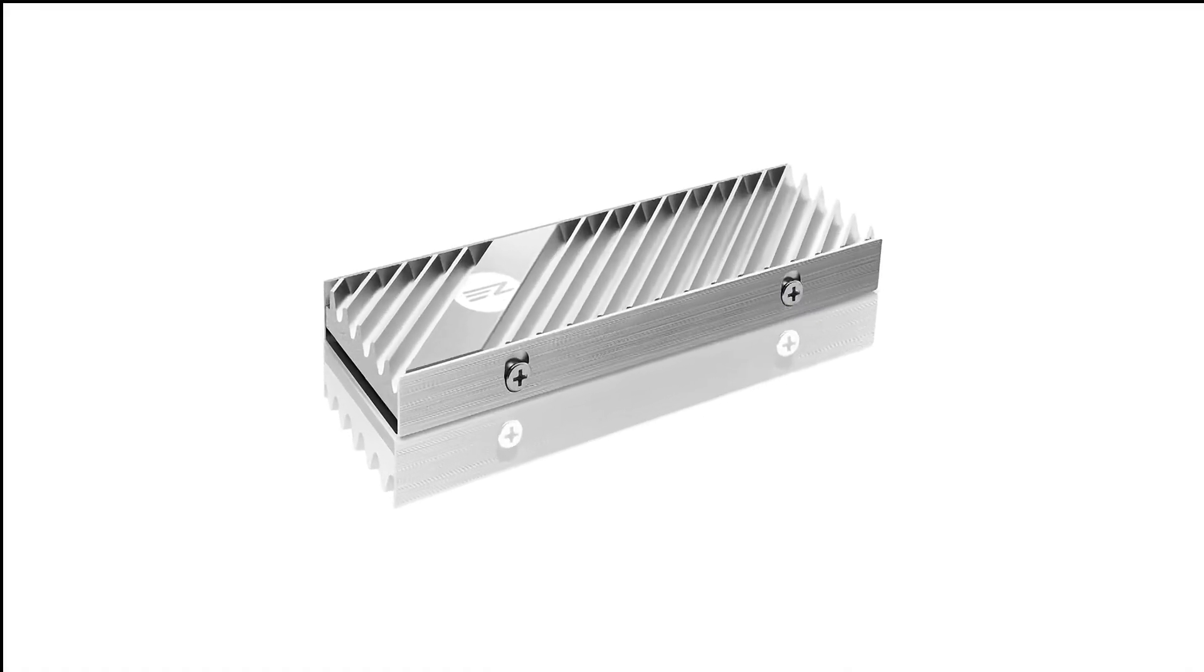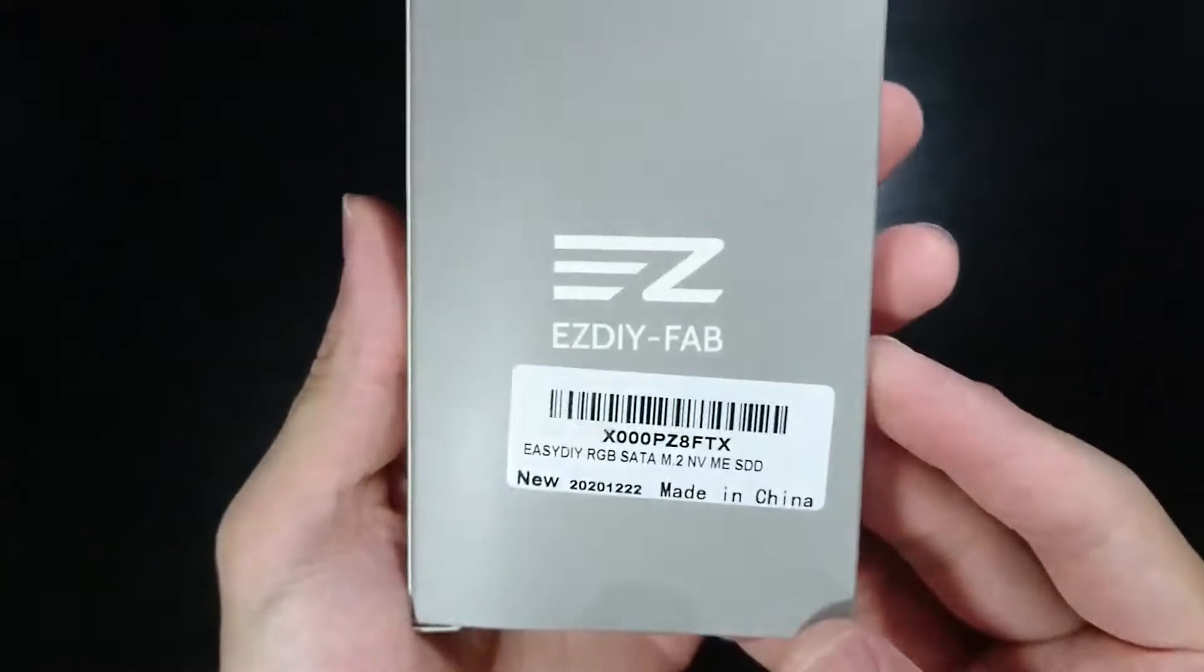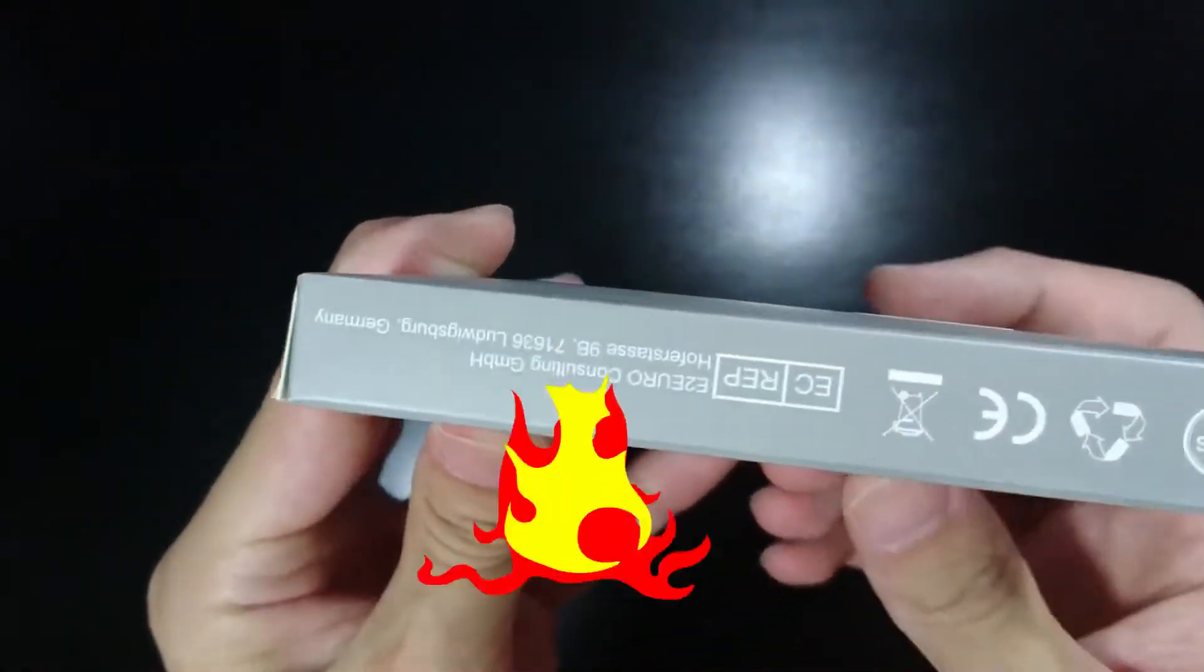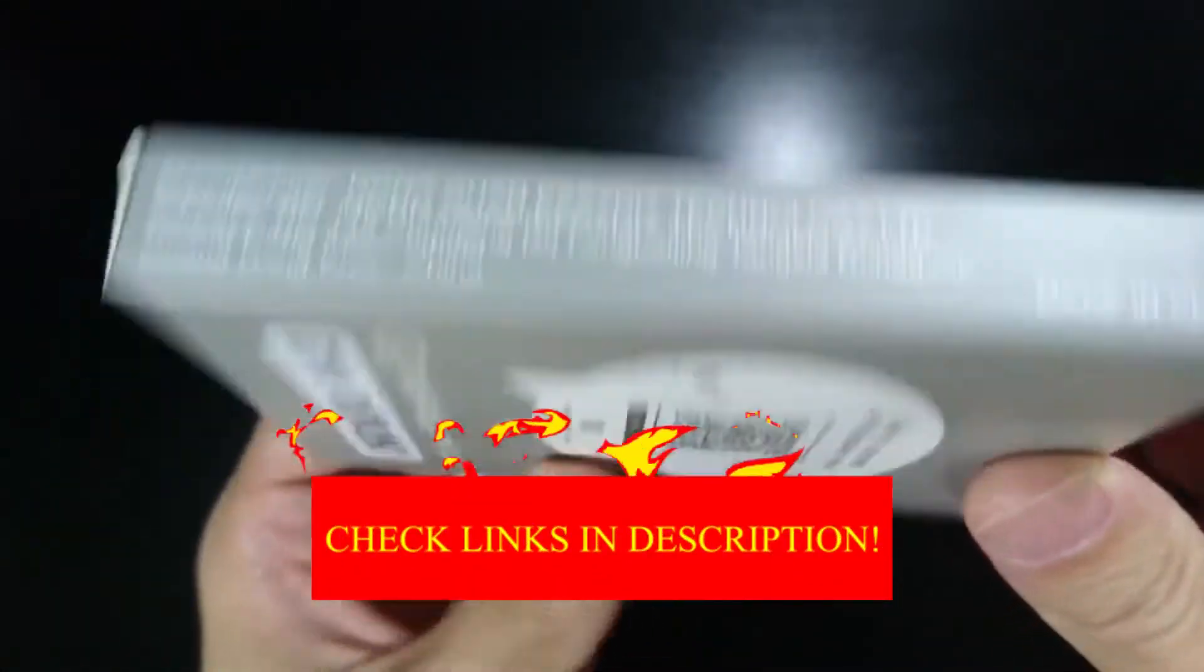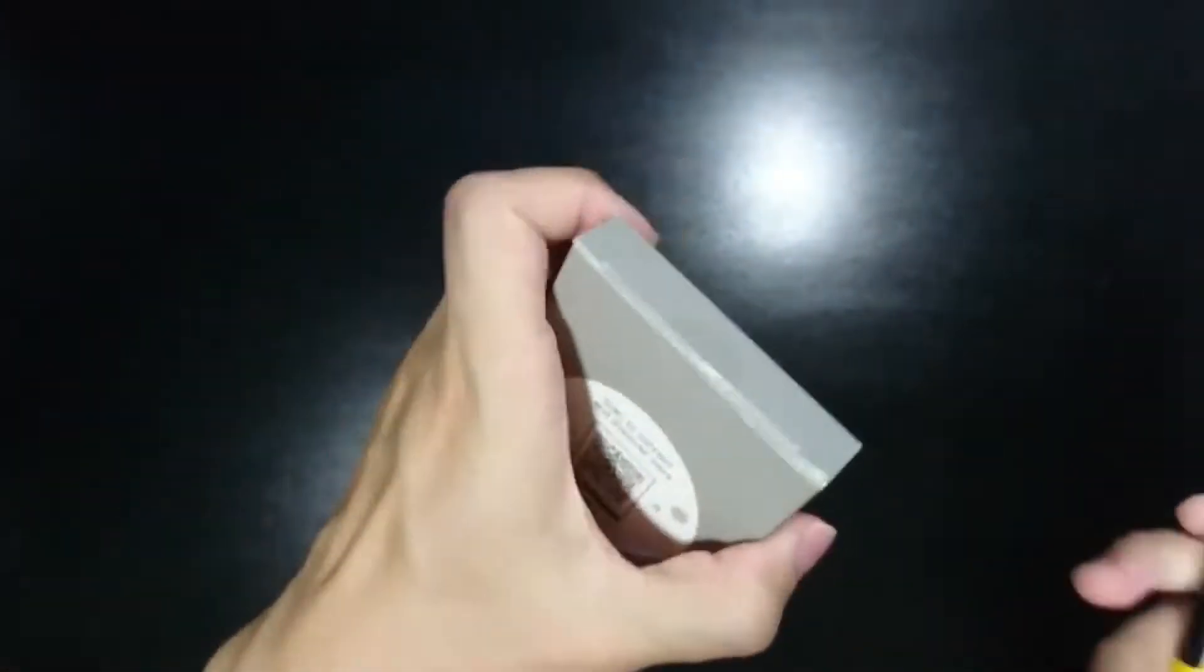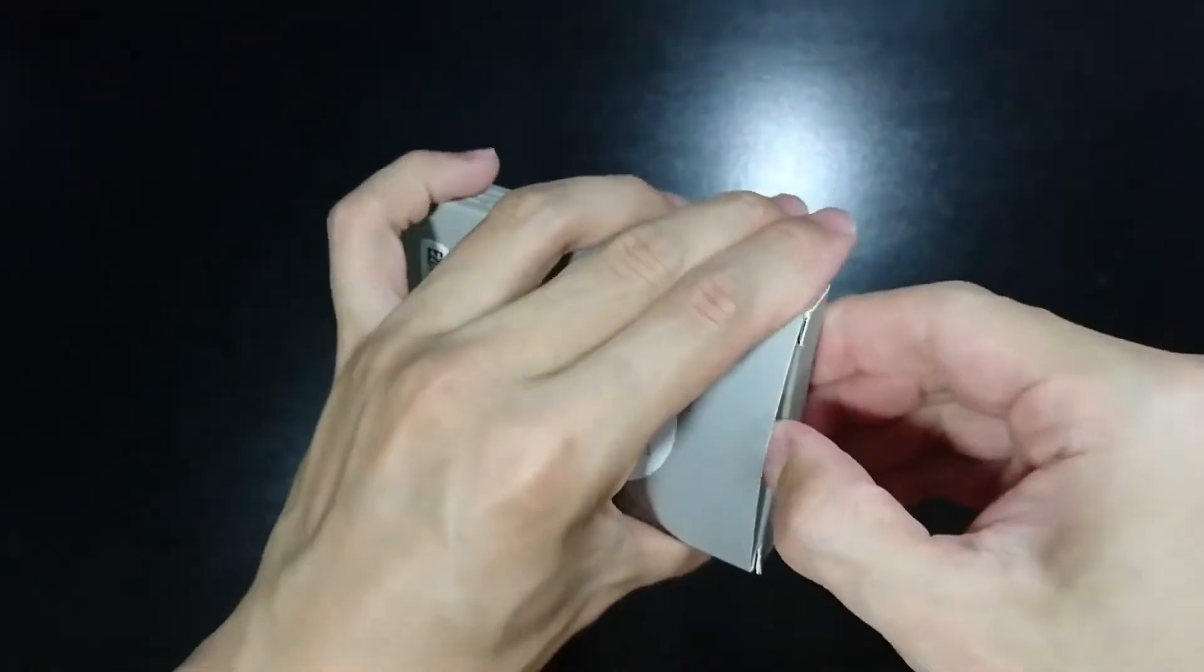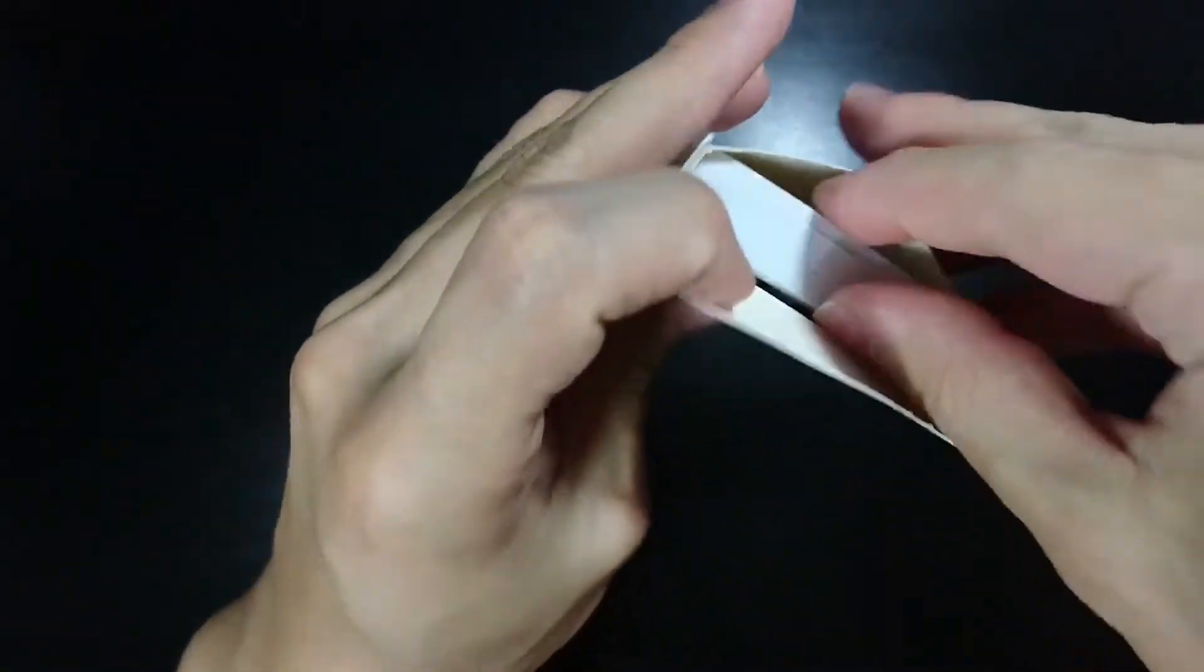Number 8 in my list is SDFAB M2 SSD Heatsink. If you're dealing with thermal throttling, but you don't want to spend too much on an M2 heatsink, the SDFAB is a great option. Its design is simple and fits any setup, whether you're a fan of RGB or not. It's available in multiple colors, and it's low-profile, so you have plenty of choices.